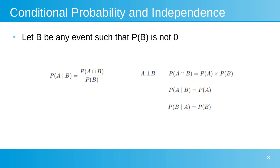Regarding conditional probability and independence: conditional probability P(A|B) is the probability of an event A occurring given that another event B has occurred, and is calculated using the formula P(A|B) = P(A and B) / P(B), where P(A and B) is the probability of both A and B occurring together, and P(B) is the probability of B occurring.